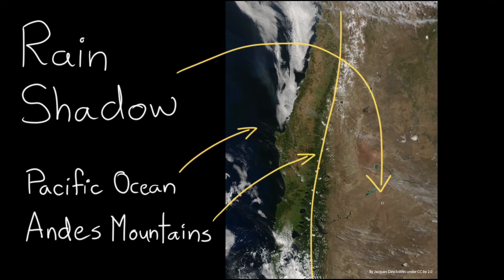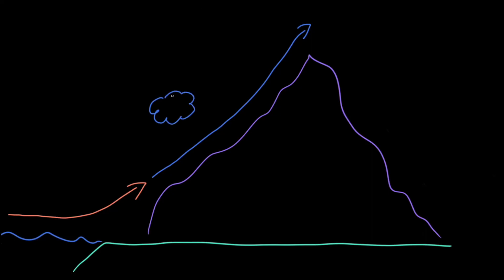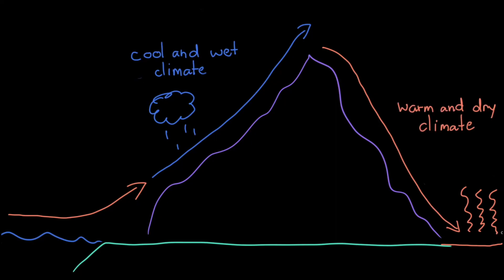What causes such a huge change? Well, when warm, moisture-rich air from the ocean meets the mountain, it's forced upward. As it rises, the air expands and cools, causing the moisture to condense and fall as precipitation. Now the air is much drier, which allows it to change temperature much faster. As that dry air descends down the other side of the mountain, it compresses and quickly becomes warmer, which leads to increased evaporation. Overall, this results in a cool and wet climate on the ocean side of the mountain, and a warm and dry climate inside the rain shadow, which is what we saw in the satellite view.